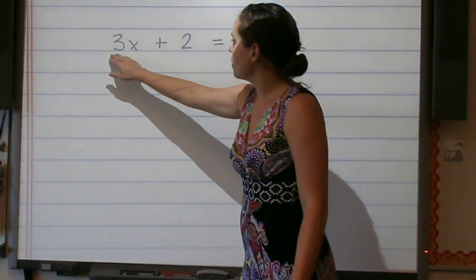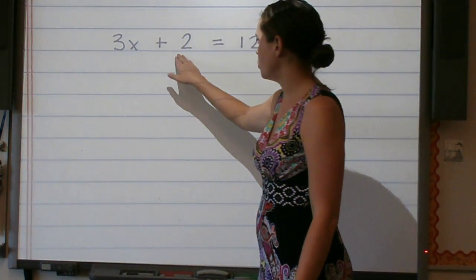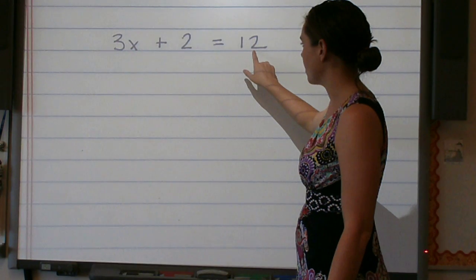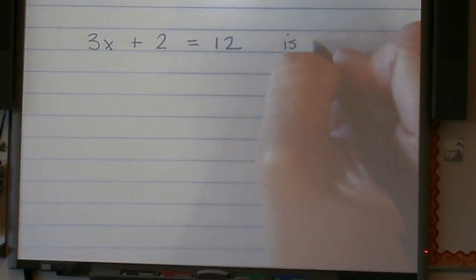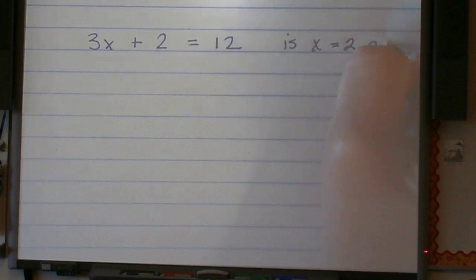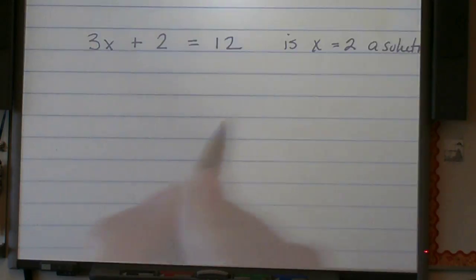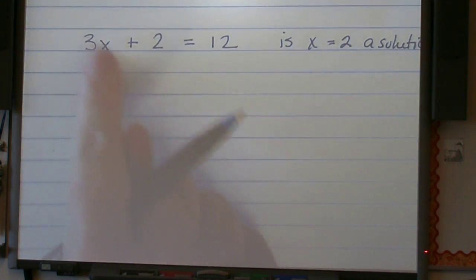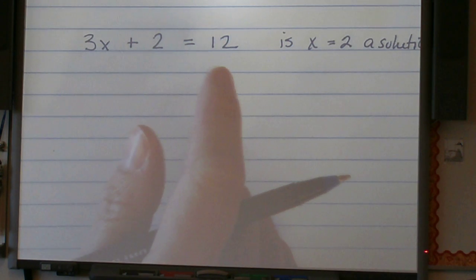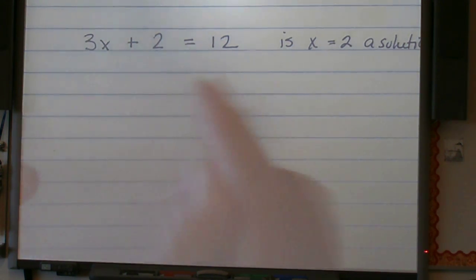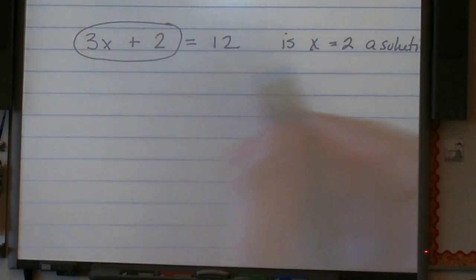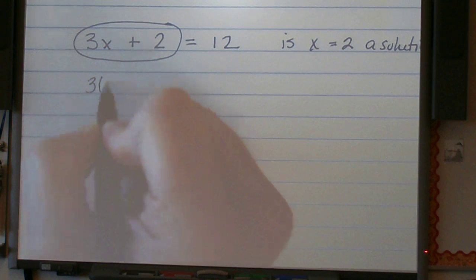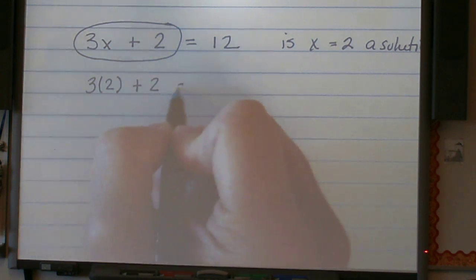On the left-hand side of the equation, we have the expression 3x plus 2. On the right-hand side of the equation, we have the expression 12. I want to see if x equals 2 is a solution. Is x equal to 2 going to make this sentence true? I am going to evaluate this expression by plugging in my known value for x, which is 2.